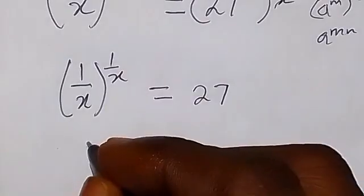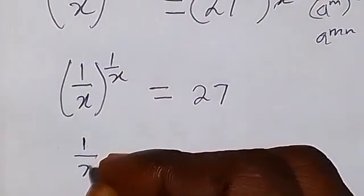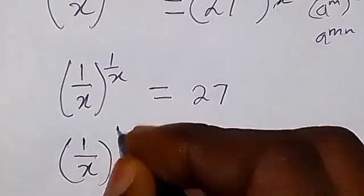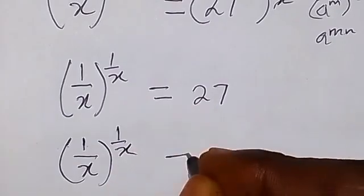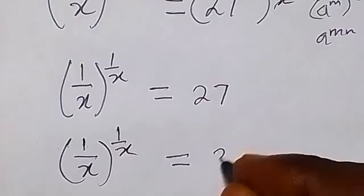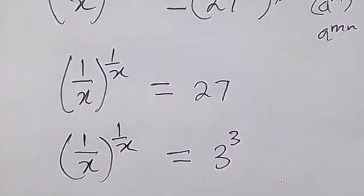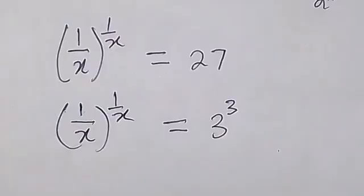Therefore this can now become 1 over x raised to power 1 over x then equals to 3 raised to power 3, because 3 times 3 times 3 will give us 27.